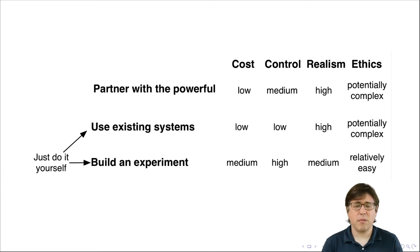And so with Music Lab, the cost was medium and actually quite high in some ways to build your own experiment is expensive and hard. The control is very high because you are constructing the whole environment. The realism is medium because although it is not taking place in an existing system, you are able to craft the system that mimics real systems. And the ethics is relatively easy because you control the system yourself.